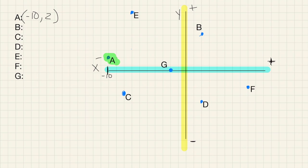Let's look at B. B is right here. Starting at 0, 0, I go over 1, 2 — so positive 2. And then up 1, 2, 3, 4, 5. So point B is over 2, up 5. So the coordinates are 2, 5.